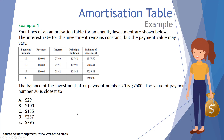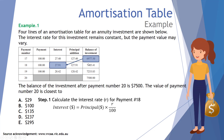Step one: calculate the interest rate. For payment 18, the principal was $6,977.50 and it returned interest of $27.91. Substituting those values in, we find the rate is 0.4% per period. Applying 0.4% to $6,977.50 confirms it gives us $27.91.